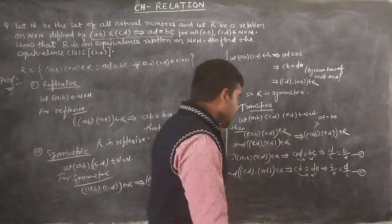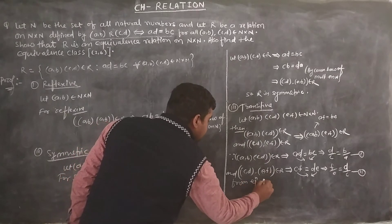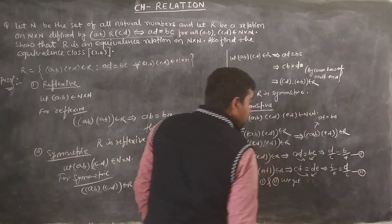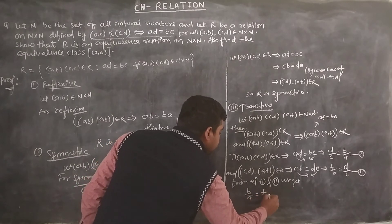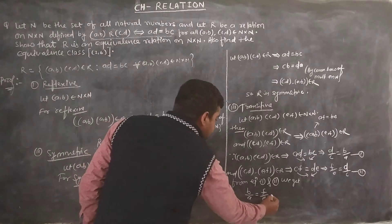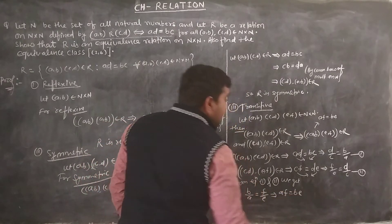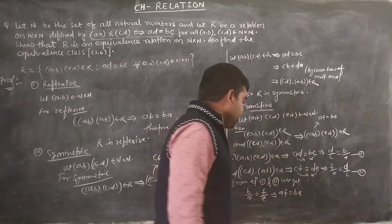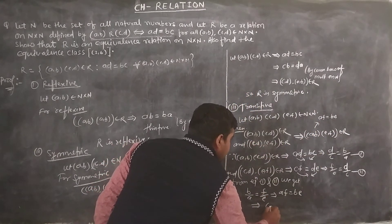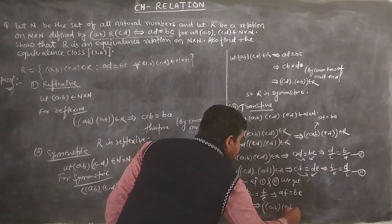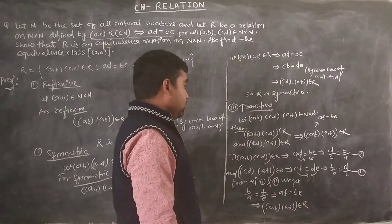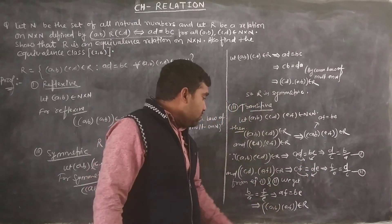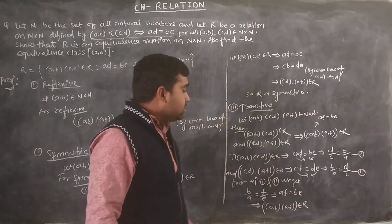From equations 1 and 2, we get d/c equals b/a and f/e equals d/c, which gives b/a equals f/e, so a·f equals b·e. Therefore (a,b) R (e,f) belongs to R. So R is transitive.